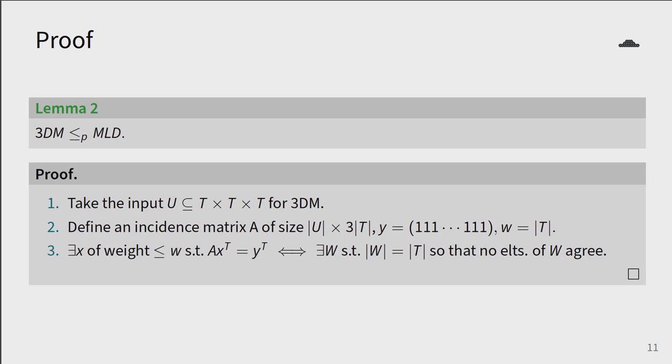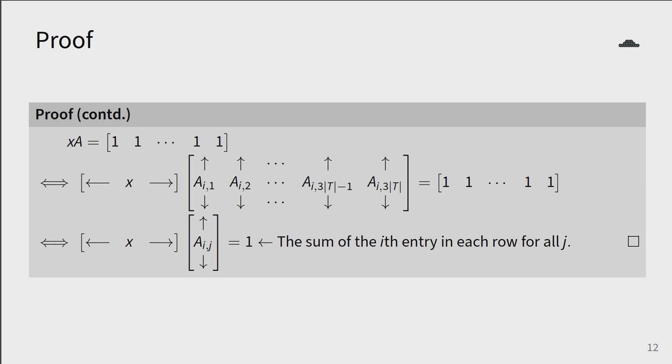If there exists a solution to this instance of the MLD problem, then there exists a vector X of Hamming weight T such that XA equals Y, and this implies that there is a subset W of U with size T such that no elements of W agree, and our reduction is complete.